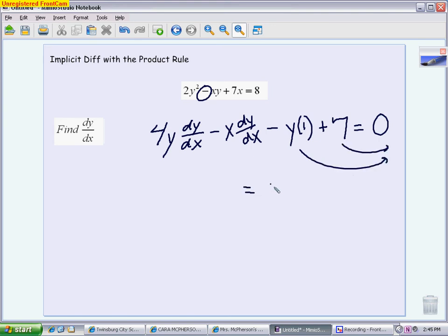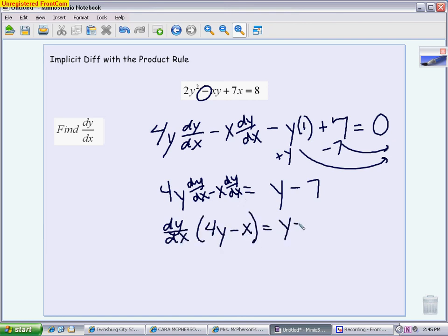When I do that, I'm going to get a positive y on the other side, because I have to add this, and I'm going to get a negative 7 on the other side. Over here, I have a 4y dy dx and a negative x dy dx. I want to factor out a dy dx, and you can do that all at once to save some time. So we have a 4y minus x equals y minus 7, and then the last step to get dy dx by itself is to divide by the factor that is next to it. Here is your derivative. Keep in mind, it will be made up of x's and y's, because your original function was written implicitly. Your derivative will also be written implicitly, and that's how you do implicit differentiation with the product rule.